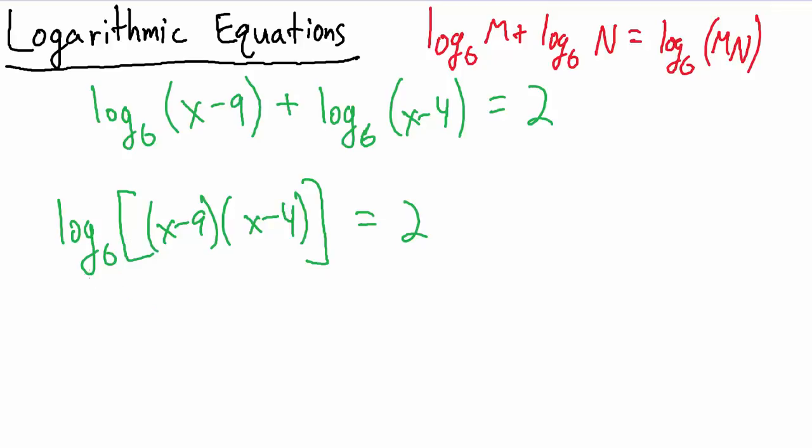Now what I want to do is FOIL inside of the log, so we're going to have base 6 log of, if we FOIL here, x squared and then minus 4x minus 9x gives us minus 13x, and then minus 9 times minus 4 is going to give us plus 36. So that's what's going on here and then still just equals 2.